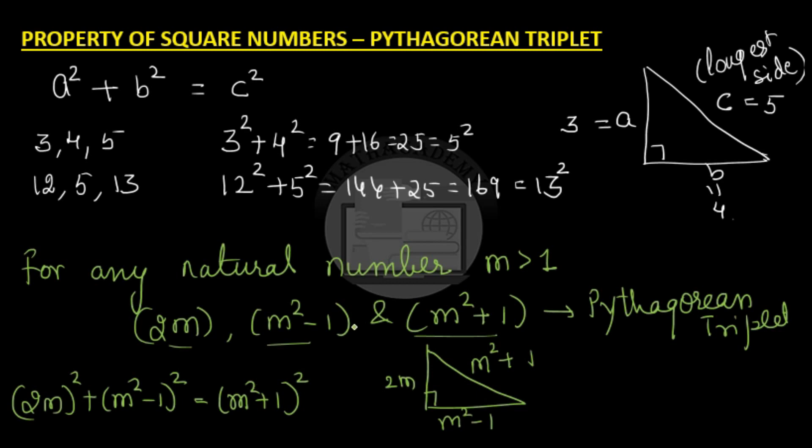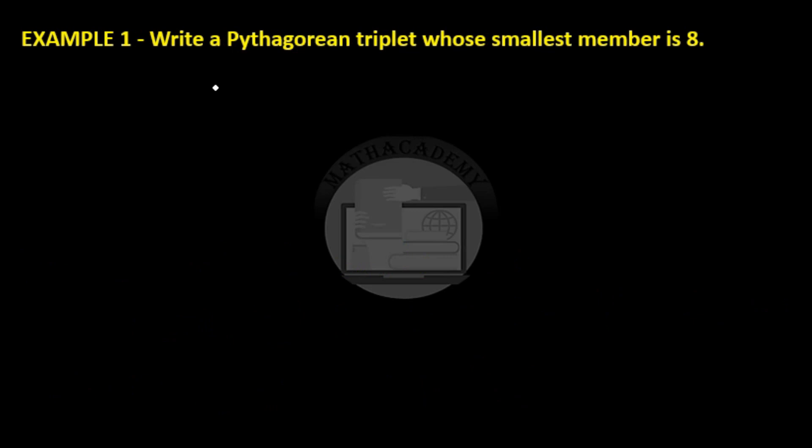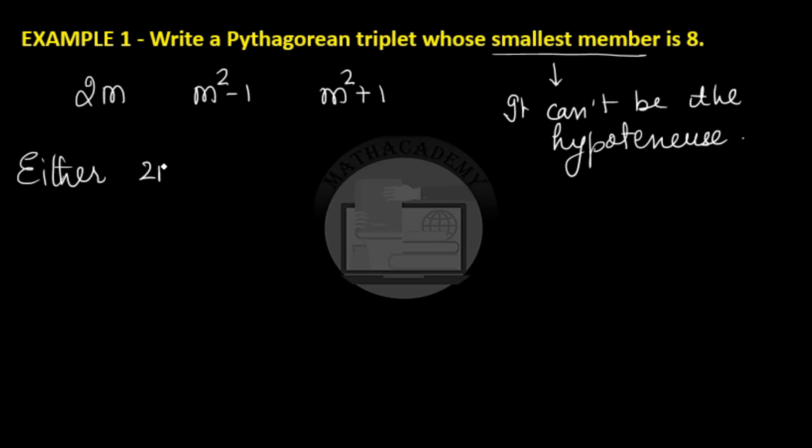Let us learn this property through examples. Write a Pythagorean triplet whose smallest member is 8. Since it is the smallest member, it can't be the hypotenuse. So out of 2m, m² - 1 and m² + 1 which is the Pythagorean triplet according to the property, m² + 1 can't be 8. So either 2m = 8 or m² - 1 = 8.